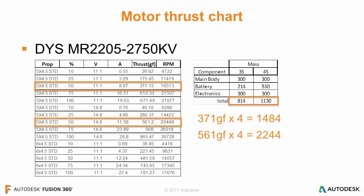For the same prop on the same motor but a 4-cell system or 14.8 volts, we now have 561 grams of force. Multiply that by four we get 2244 grams. We have to lift 1130 grams. We're pretty close to that 2-to-1 ratio — we're at about 1.95 — so this is pretty good. The input at 14.8 volts is giving us a lot more output; even though we have to lift more mass we can still account for it and get a better thrust ratio.